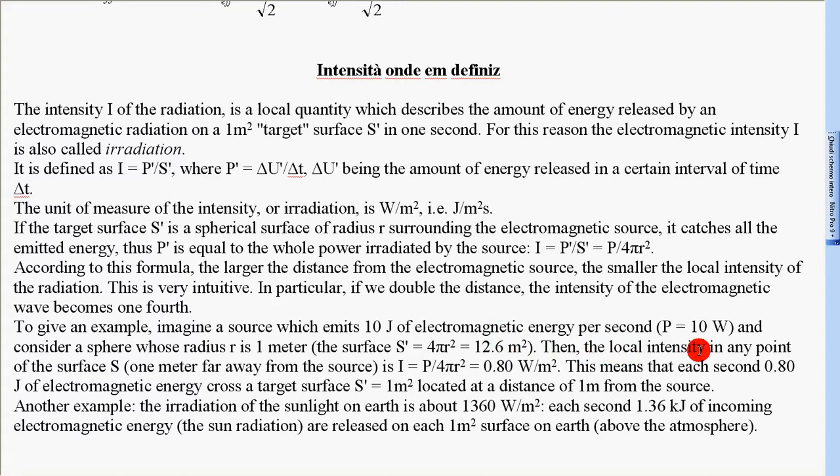Then, the local intensity in any point of the surface S, 1m far away from the source, is I = P/(4πR²) = 0.80 Watt on m². This means that each second, 0.80 Joules of electromagnetic energy cross a target surface S' = 1m², located at a distance of 1m from the source.